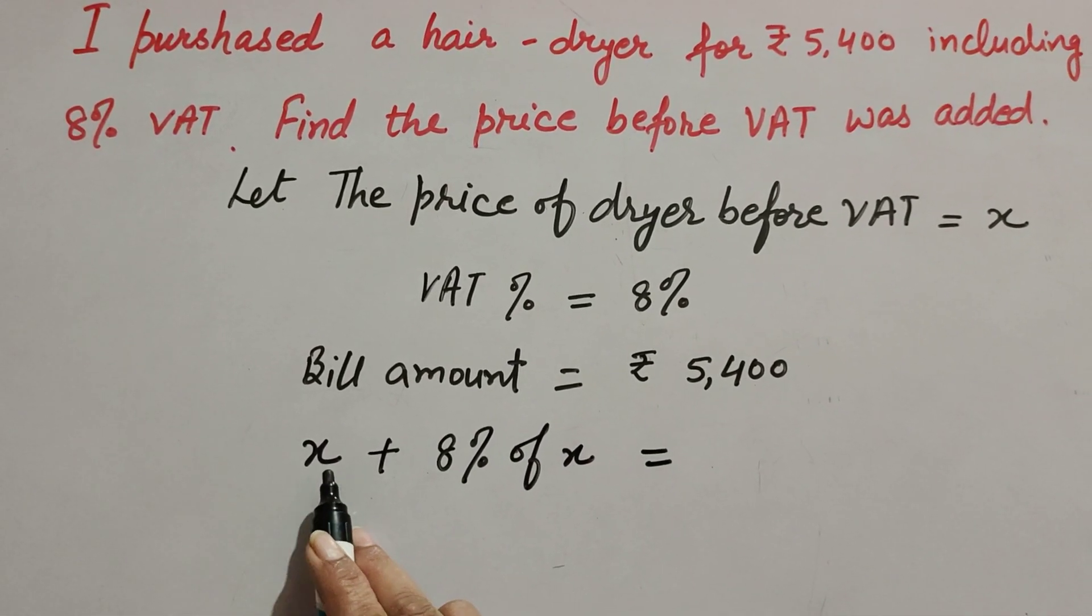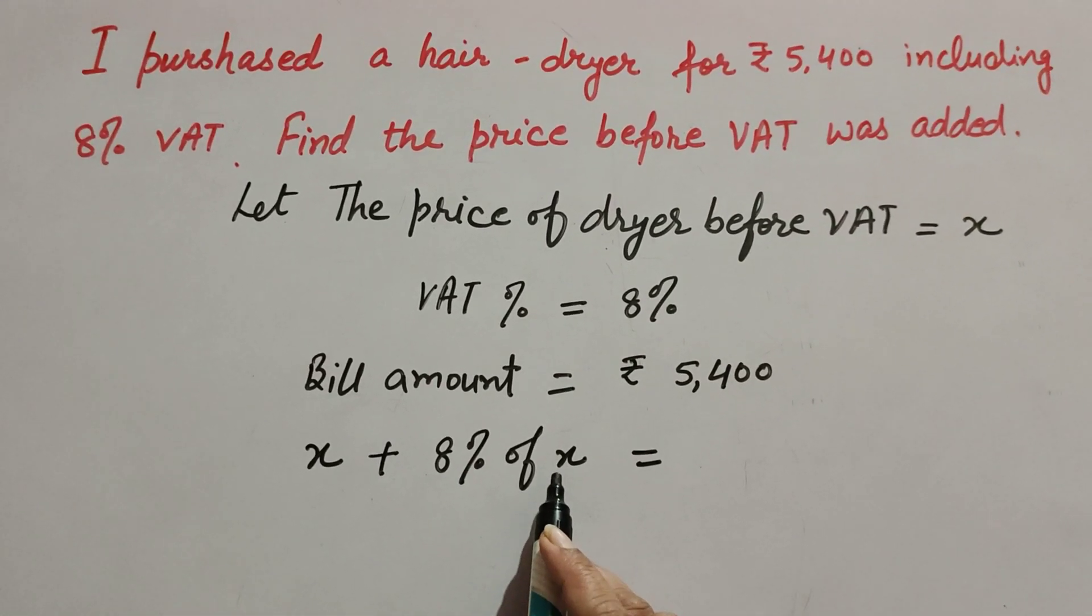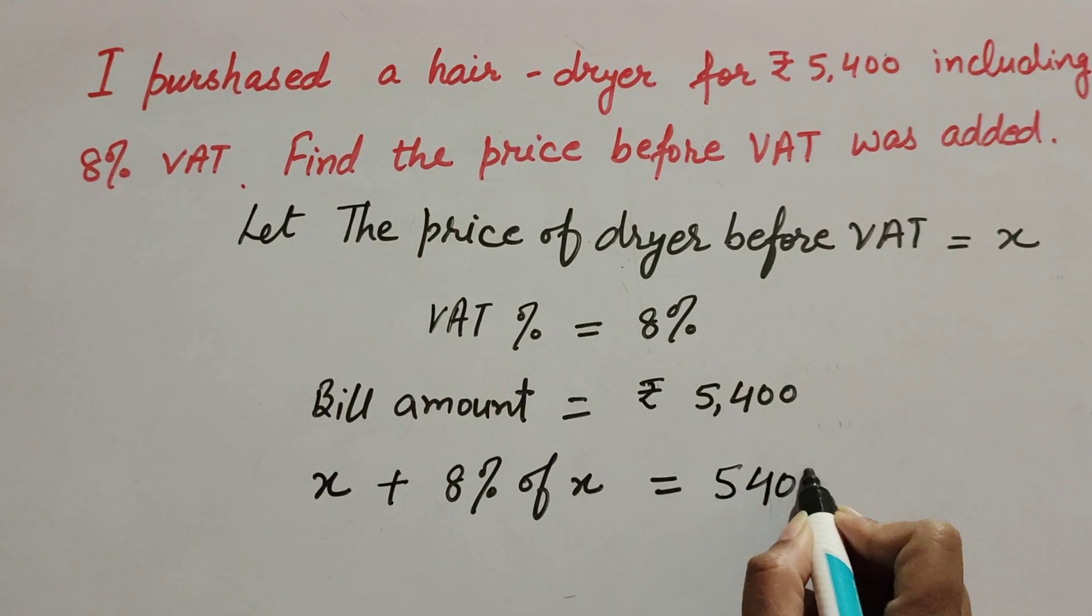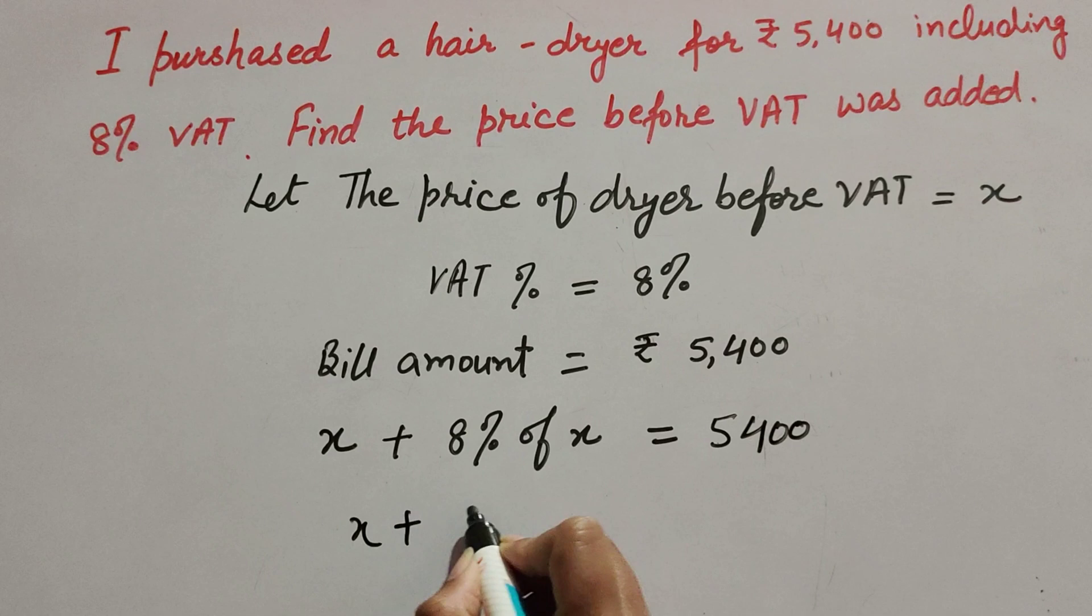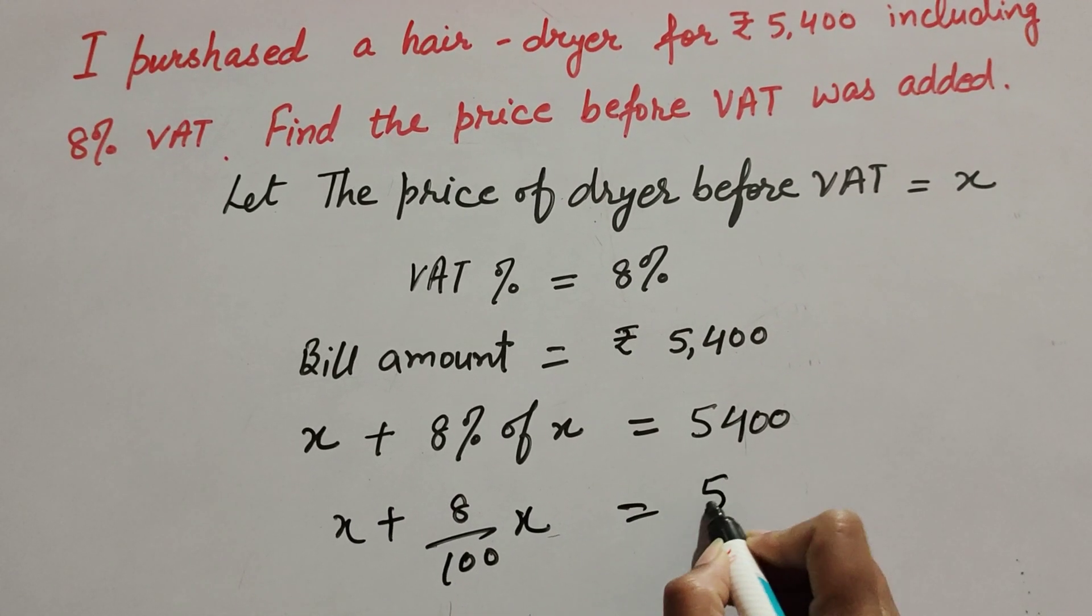The price of dryer plus 8% VAT on the dryer equals ₹5,400. So x plus 8% of x equals 5,400. Writing this as an equation: x plus 8/100 × x = 5,400.